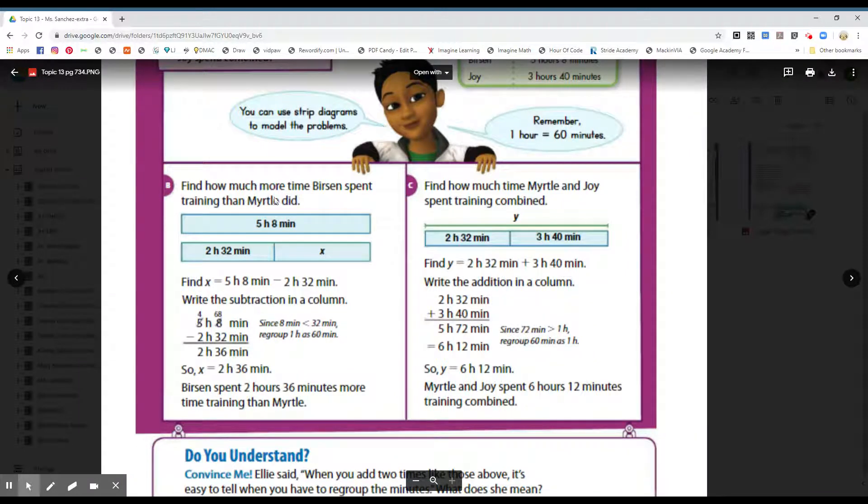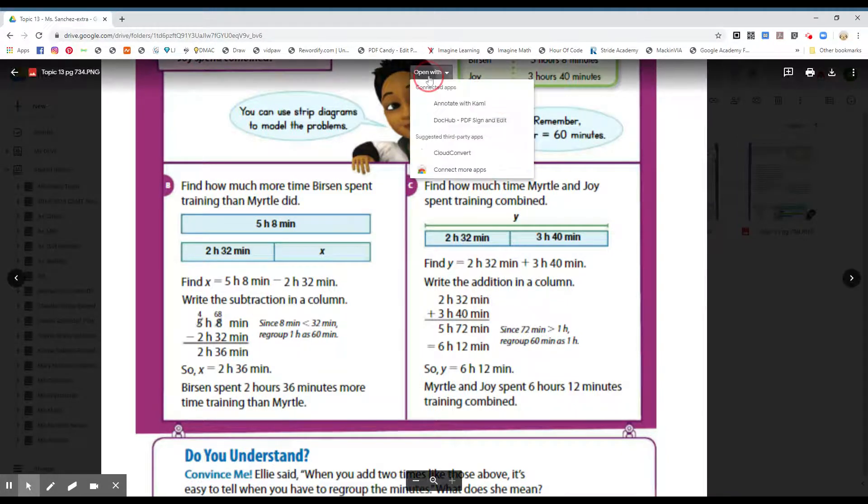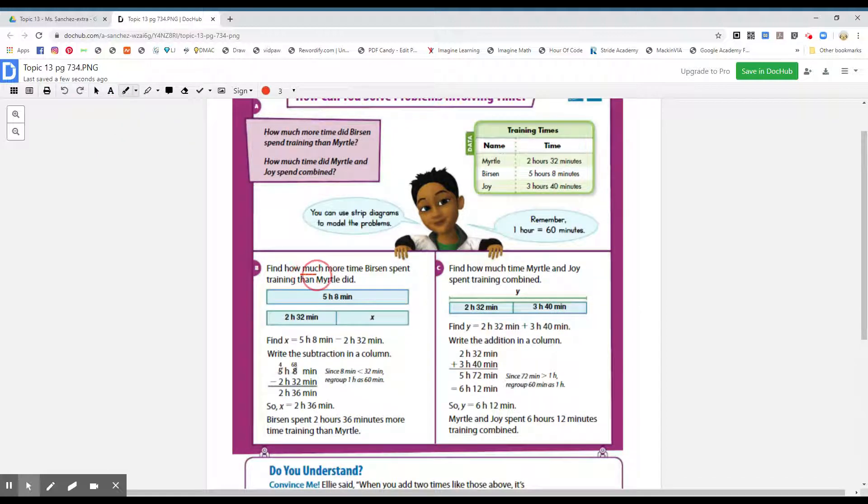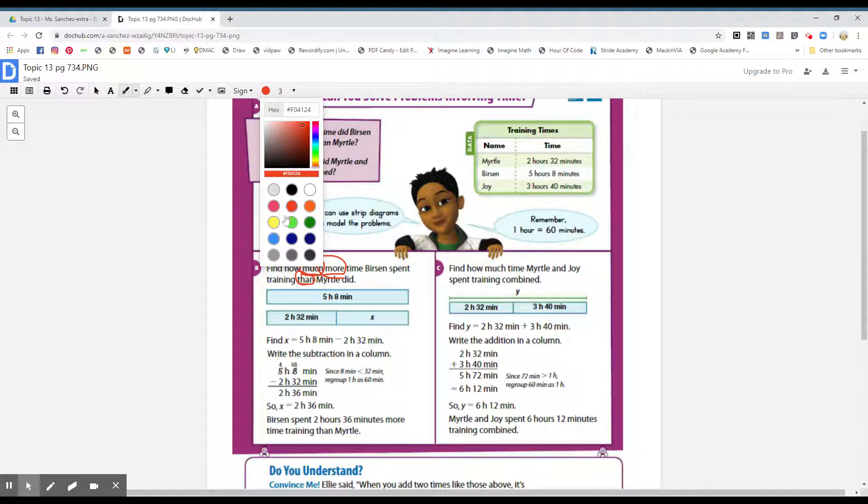Find how much more time Burson spent training than Myrtle did. Okay, I'm going to open this on .cub. Okay, boys and girls, if they ask how much more than, and boys and girls, what is the operation if we're comparing? If you said subtract, good job. That is what they're doing here, boys and girls. They are subtracting because they are comparing the numbers.